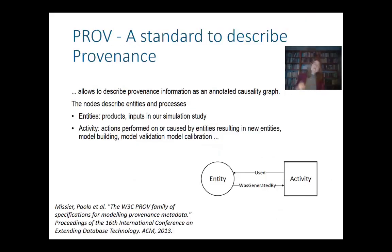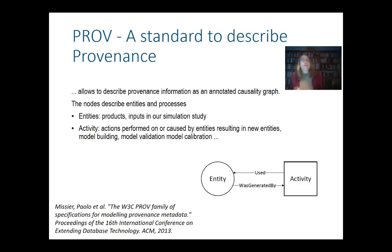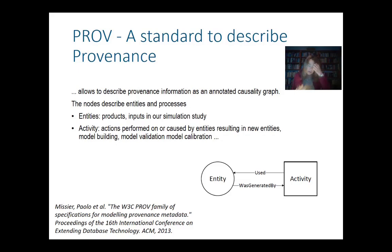So what we use here is PROV. PROV is a standard to describe provenance as an annotated causality graph. We have a graph with nodes and edges, and we have entities as nodes — these are the products and inputs in our simulation studies — and activities, which are actions performed on or caused by entities resulting in new entities.